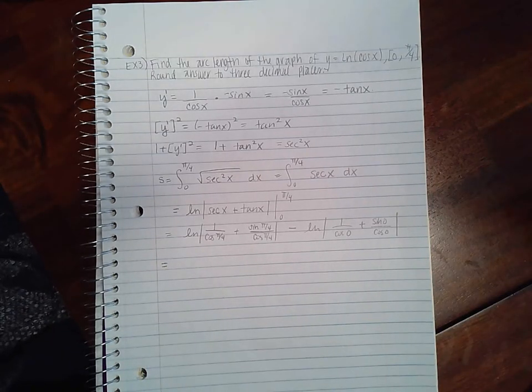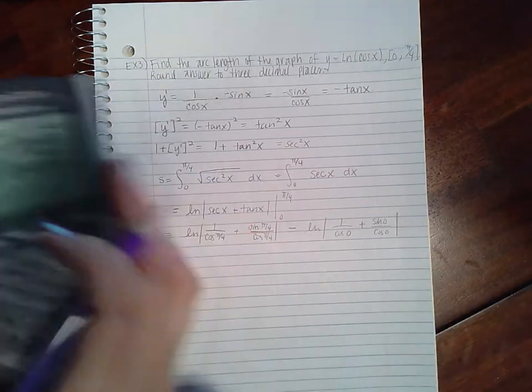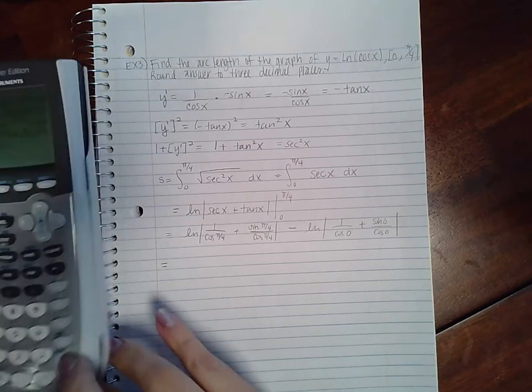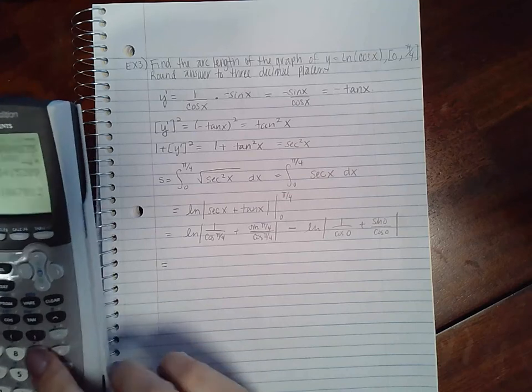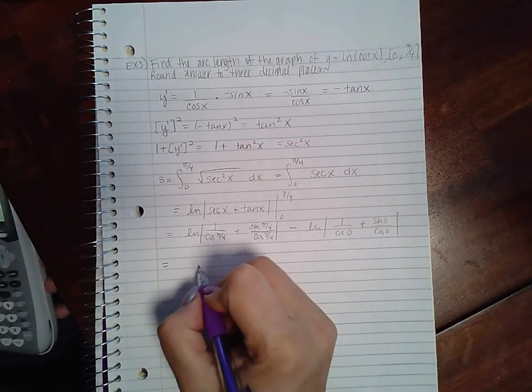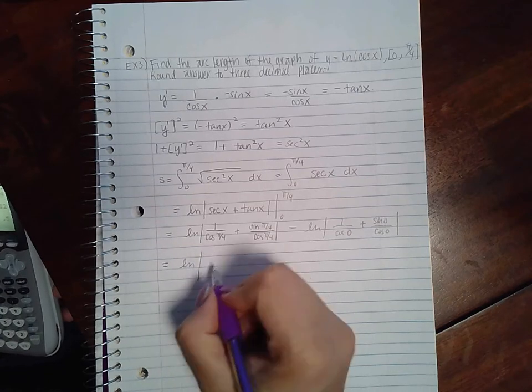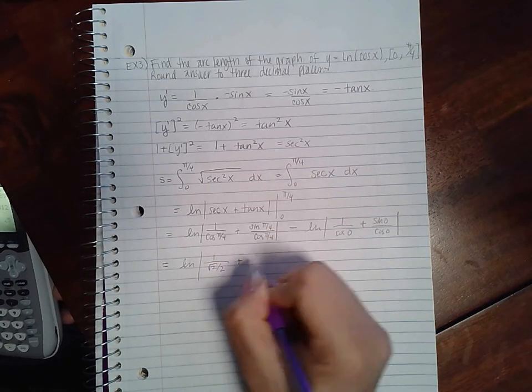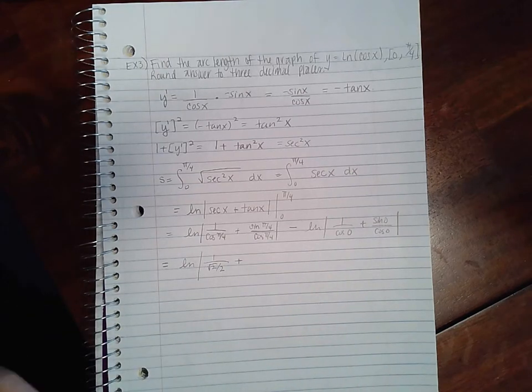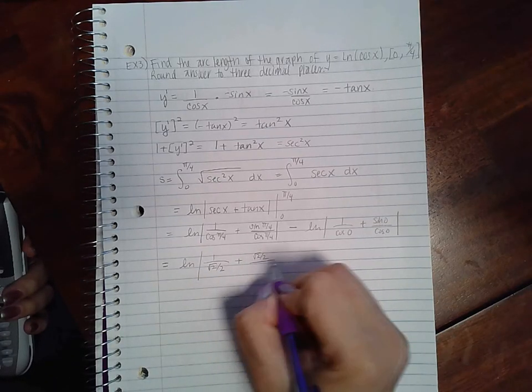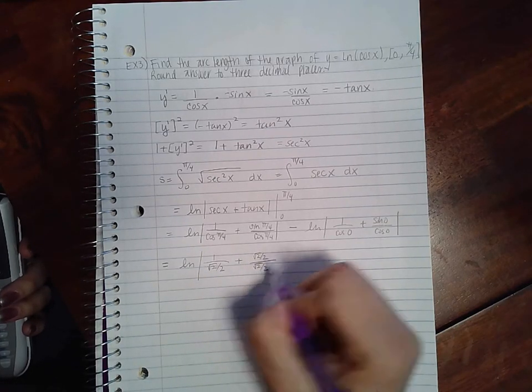Now let's see... cos(π/4) is 1 over √2/2. sin(π/4) is √2/2.